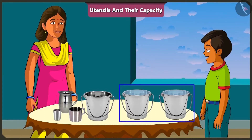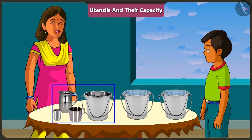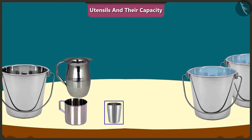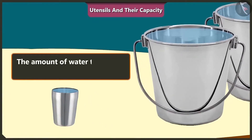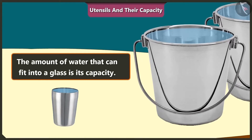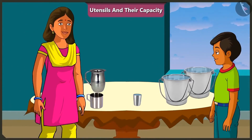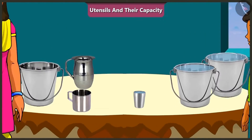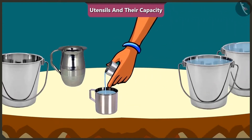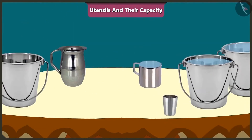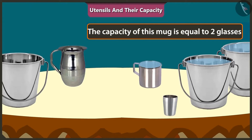Mommy, what are these two buckets of water for? Mishtu, we will use this water to find the capacity of all these vessels. First of all, I will fill this glass completely with water. The amount of water in this glass is its capacity. Now, with the help of this glass, I will fill this mug. One glass and one more, that is two glasses. We can fill this mug with two glasses of water. This shows that the capacity of this mug is equal to two glasses of water.